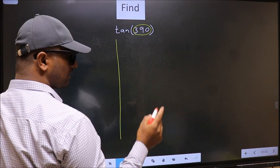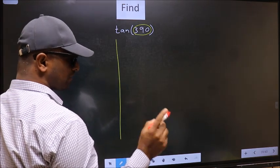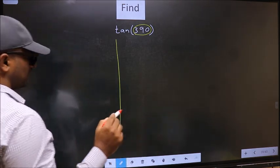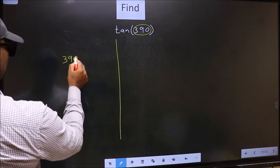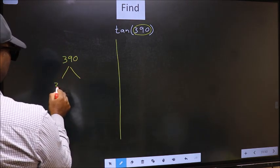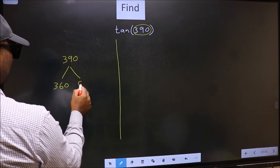What I mean is 390 lies between 360 and 540.